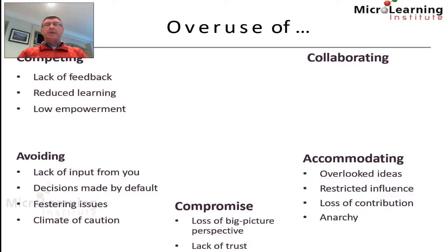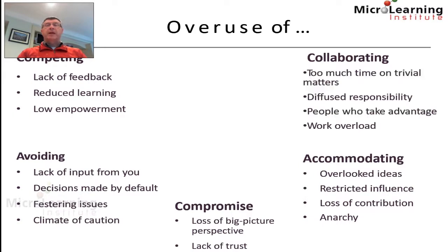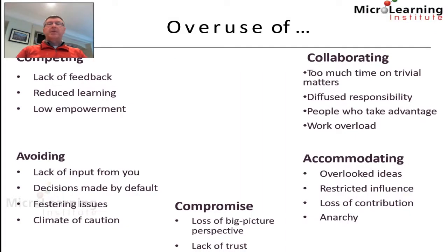Overuse of accommodating can mean overlooking new ideas and having restricted influence, since we don't express our views robustly. There may be a loss of contribution, potentially leading to anarchy. Overuse of collaboration means spending too much time on unimportant issues, diffused responsibility, and work overload as we try to fully resolve every issue together.